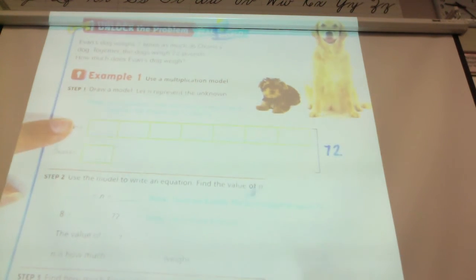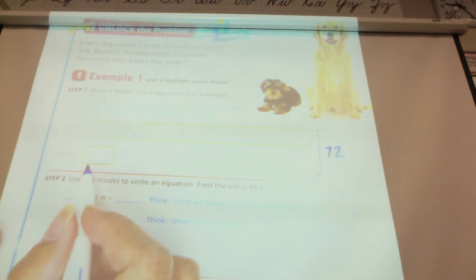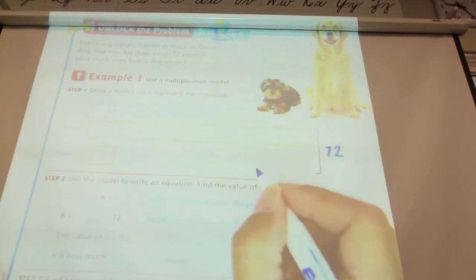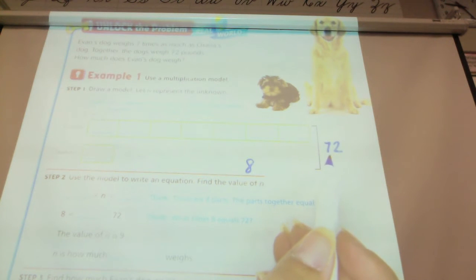So, we know that they total 72. This is where it gets tricky. So, pay attention. Here's Xana's dog's weight and here's Evan's dog. How many boxes do I have total? 8 boxes total. I have the 7 boxes for Evan and I have Xana's 1 box. So, there's 8 boxes total. I'm going to write that there so I don't forget. You don't have to write it. This is just so you guys understand. I need to think about what number times 8 equals 72.